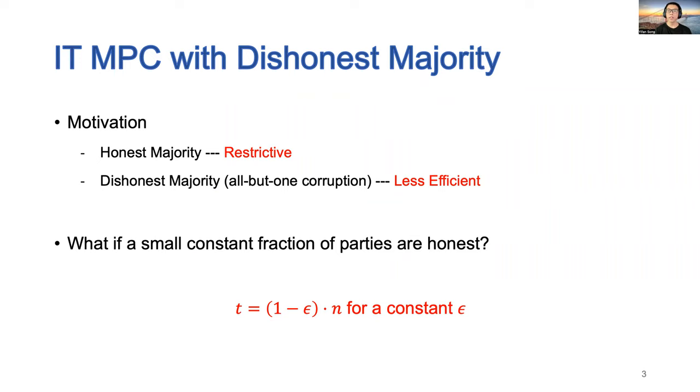However, the requirement of honest majority can be too strong to be met for real-world applications. If there is no honest majority but a small constant fraction of parties are honest, can we speed up the protocol in such a setting?